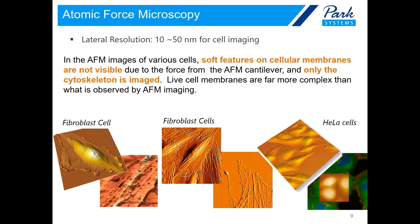Images produced by the scanning probe in AFM can give unique 3D topographical images not obtainable from other optical imaging techniques, and also provide mechanical characterization data for biological samples. There is no better instrument than AFM for measuring single molecular interactions. However, if you take a careful look at AFM cell images, you will see that soft features on the cellular membrane often vanish due to the force of the AFM cantilever. Only the cytoskeleton is imaged by AFM, and the live cell membrane is far more complex than what AFM images show.